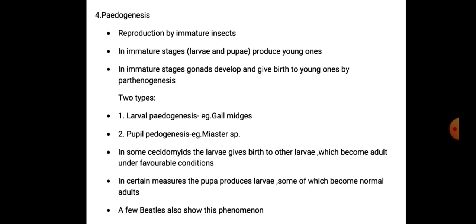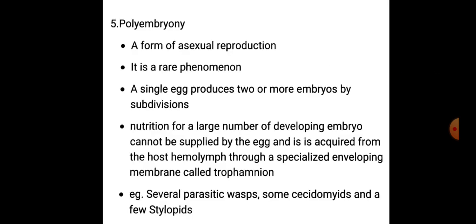A few beetles also show this phenomenon. Next type is polyembryony. This is a form of asexual reproduction and is a rare phenomenon. A single egg produces two or more embryos by subdivision. Nutrition for a large number of developing embryos cannot be supplied by the egg and is acquired from the host's hemolymph through a specialized enveloping membrane called the trophamnion.